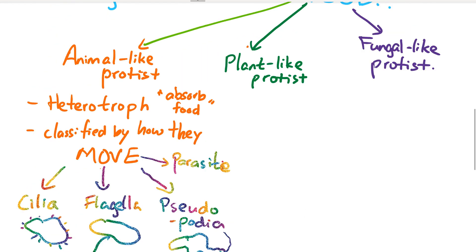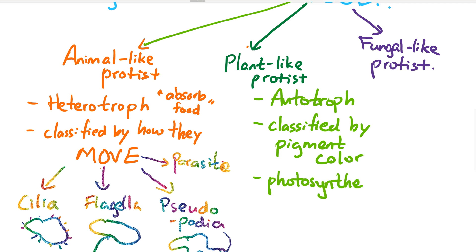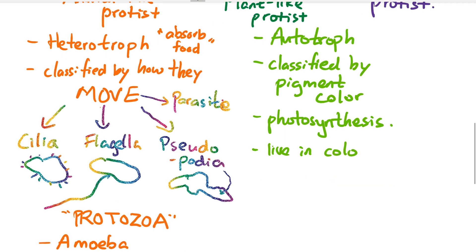Plant-like protists are autotrophs, meaning they can get energy from sunlight. They have pigments in their cells that detect sunlight and make food through photosynthesis. Remember, plant-like protists can do photosynthesis and live in colonies. Examples include giant seaweed, kelp, or algae.